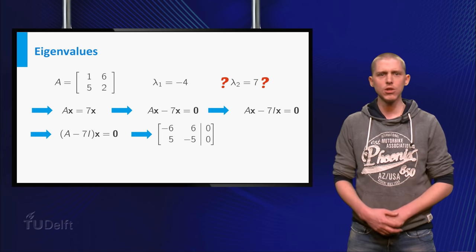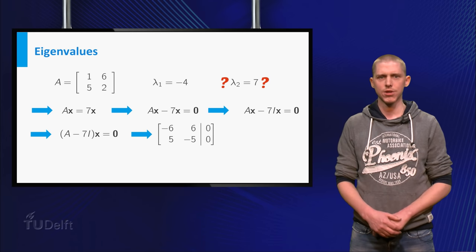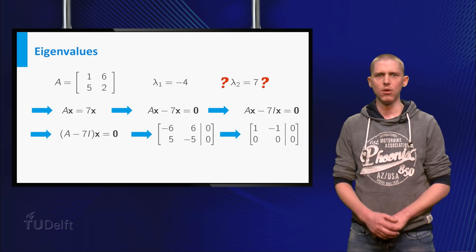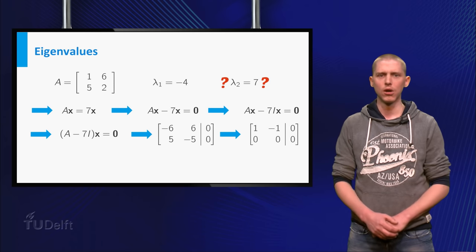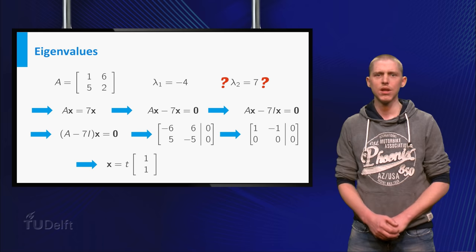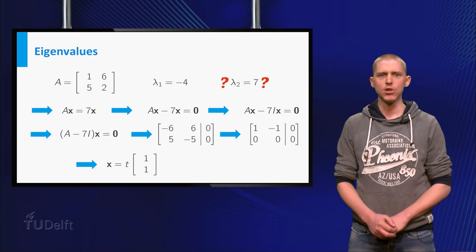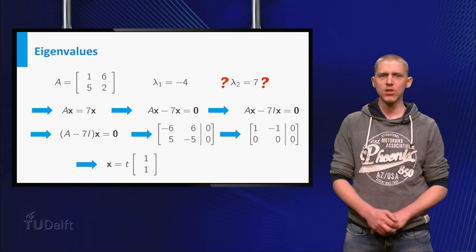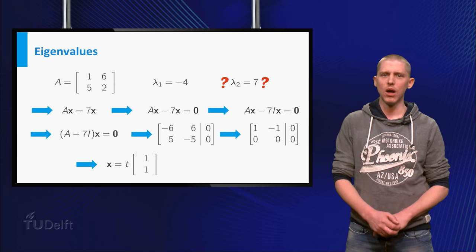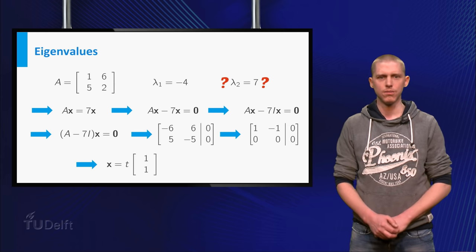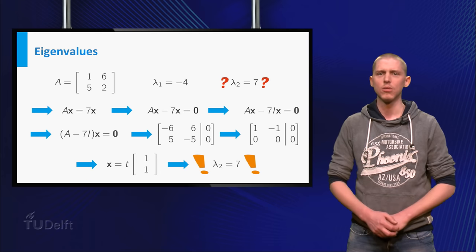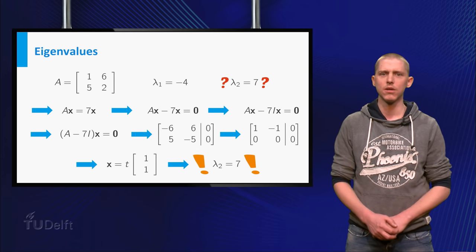You can solve this equation using the augmented matrix. The reduced row echelon form now has a free variable. But this means that any vector of the form t times 3, 2 is a solution to the equation. If you take t unequal to 0, you have found a non-trivial solution. So you definitely know from the definition that 7 is an eigenvalue of A.